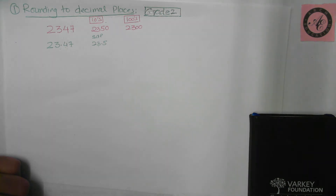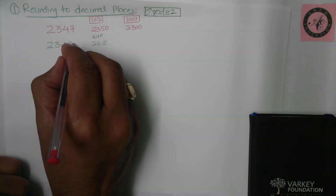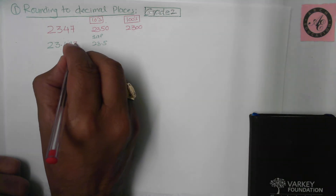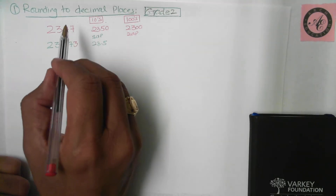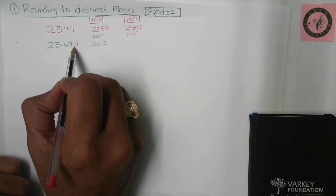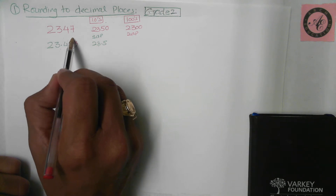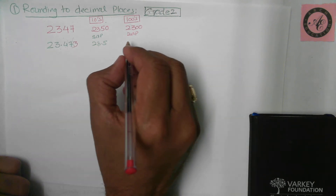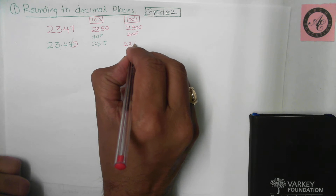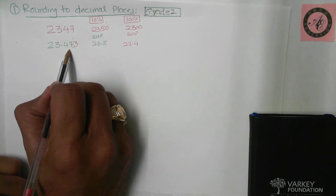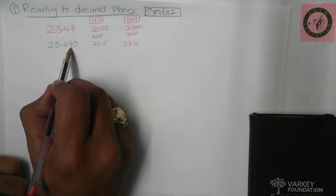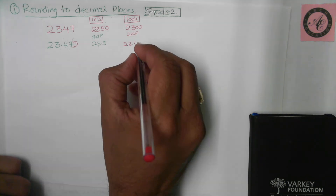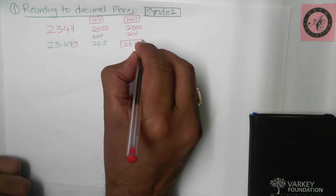If we had another digit — let's say three — and I ask you to round to two decimal places, you write everything up to the seven, then decide the fate of seven using the next digit, which is three. Three is less than five, so seven stays as seven. The answer is 23.47.